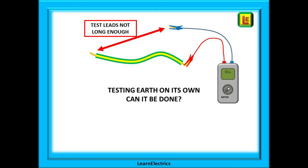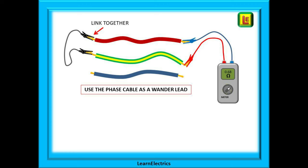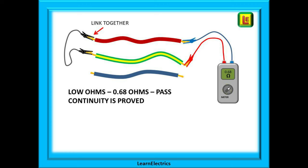The wiring regulations require us to test the continuity of the circuit protective conductors — the CPC — still affectionately called the earth cable by many electricians. But how can we test the earth cable on its own if the test leads will only reach a couple of meters and the two ends of the earth cable are at opposite ends of the house? Fortunately, most times we will be running a phase and neutral conductor to the same place as the earth conductor, so we can use one of these as a wonder lead. We can link the far end of the phase and earth cable together with a connecting block, WAGOs, or as I prefer, short crocodile clips.